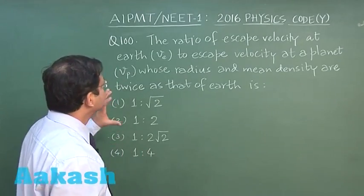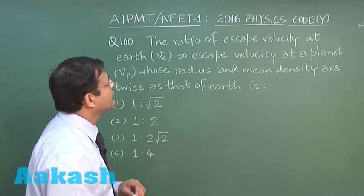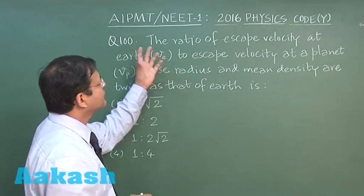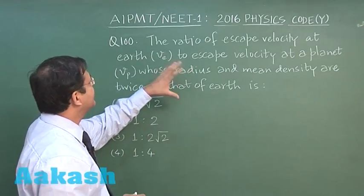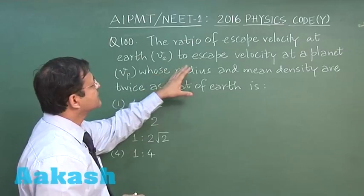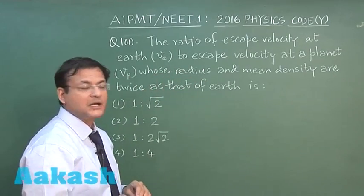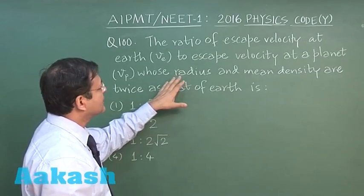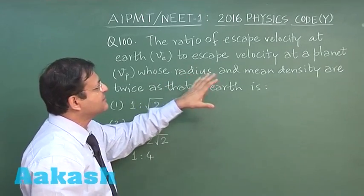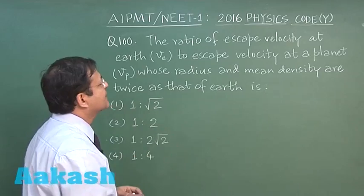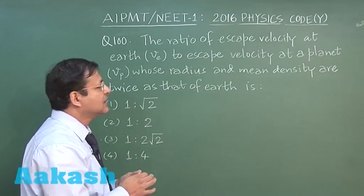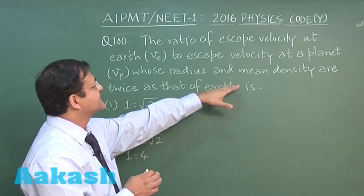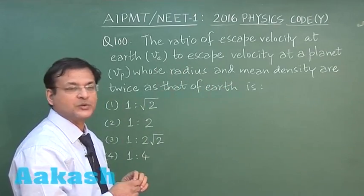Now this is the question which is involving the expression of escape velocity. You have to find out the ratio of escape velocity at earth to escape velocity at some other planet. And the data in terms of ratio are given in terms of radius and mean density. So the expression of escape velocity is to be molded in a direction in which density and radius is there in the expression.